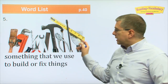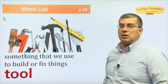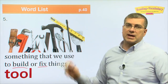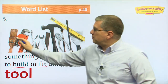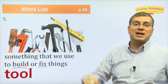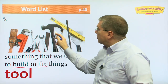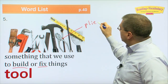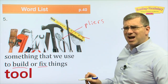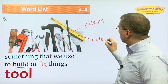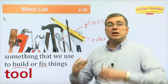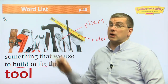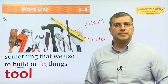Number five: we were talking about tools — something that we use to build or to fix things. We can see a paintbrush, which helps us fix things or make things look nice. There's a hammer, pliers, a ruler. There are many types of tools with many different names and uses. All these tools are very useful for doing what we want to do.